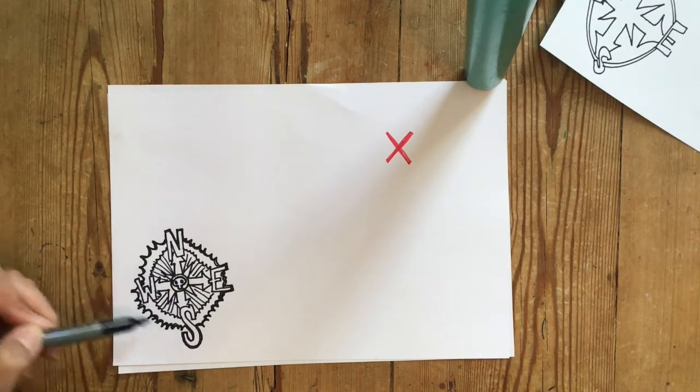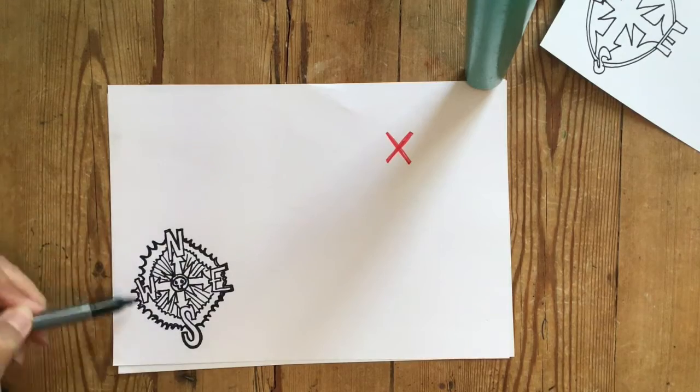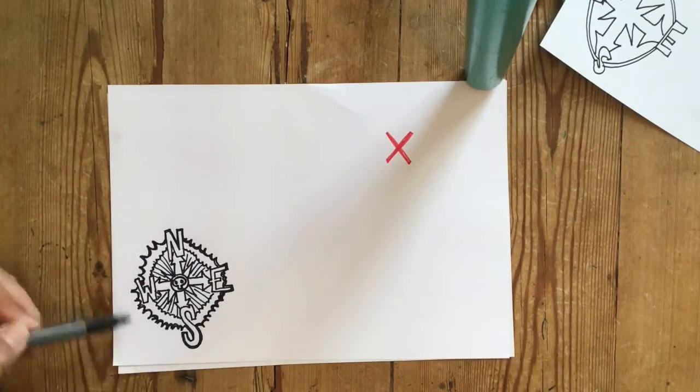A compass rose is a drawing showing different directions on a map. It's usually found somewhere on the edge of the map.